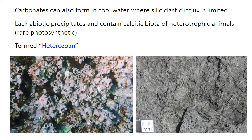In contrast, cool water carbonates lack these abiotic precipitates — so ooids, micrite, and peloids are absent. The photosynthetic and symbiotic organisms are also absent or at least very rare. Allochems are instead dominated by calcitic shell fragments from heterotrophic animals. Heterotrophic means they derive nutrients from eating other plants or animals, and most of them are filter feeders that filter out plankton from the water. Because heterotrophs dominate and photosynthetic organisms are rare, these cool water carbonates are called heterozoan carbonates.